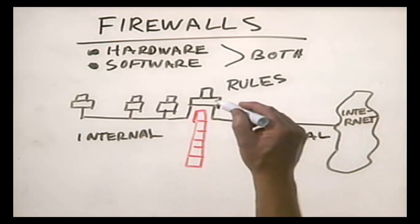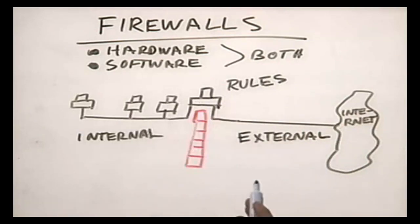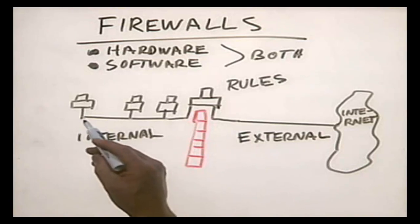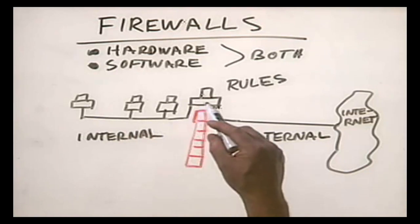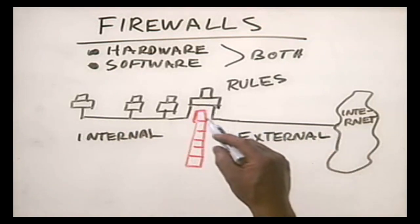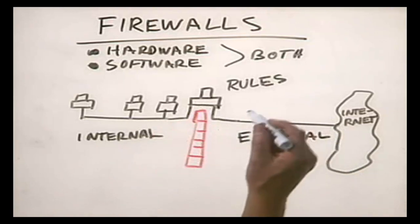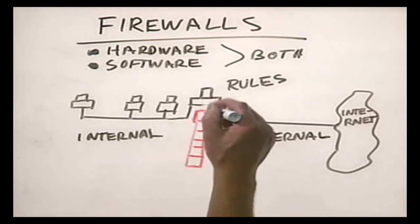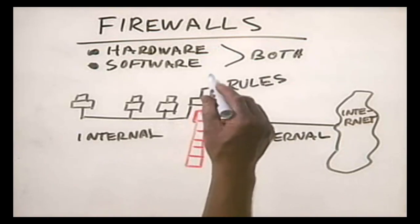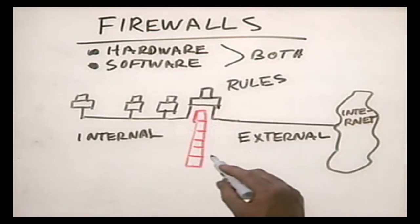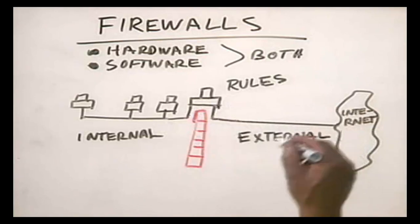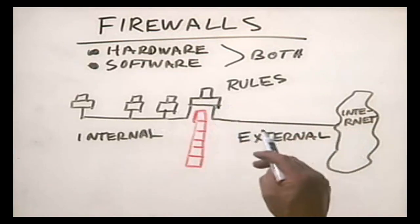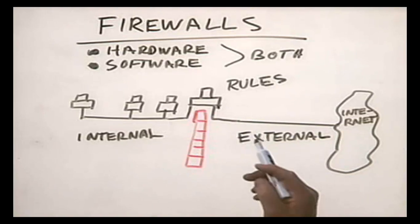In other words, we could say any data that originated outside the network and is trying to come in — do not allow, you cannot come inside. We can say any data that originated with a request from the internal network — for instance, if somebody requested a web page from a web server — go ahead and allow that. We can say any FTP traffic coming through is not allowed because we don't want passwords and usernames being transmitted in clear text. We can say any data being transmitted on a particular port, such as port 80, is allowed through the firewall, but any data running on a different port is not allowed through.